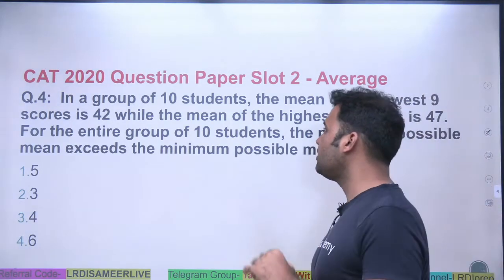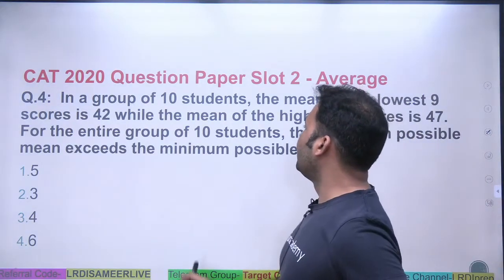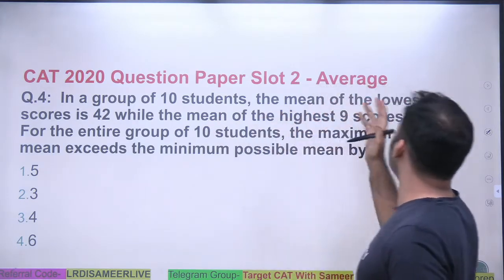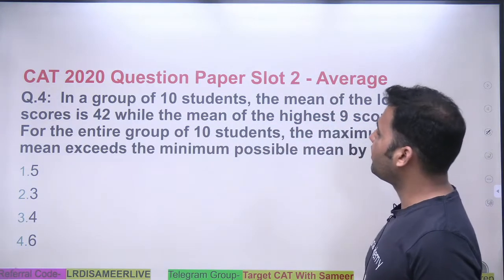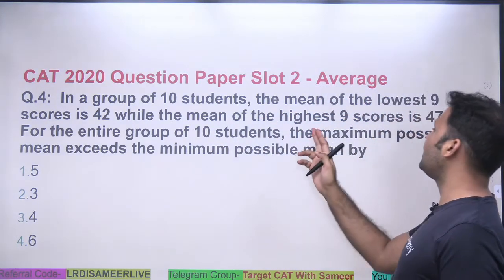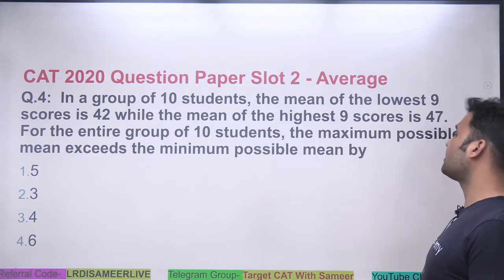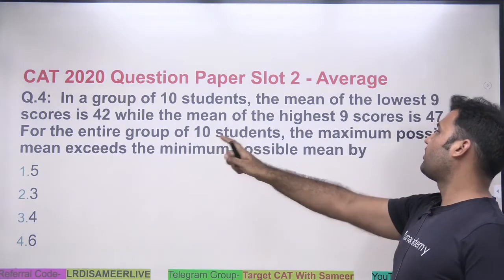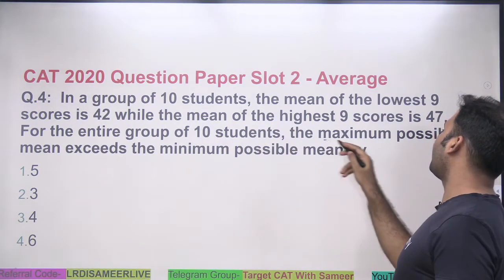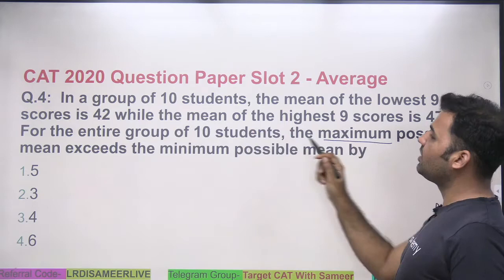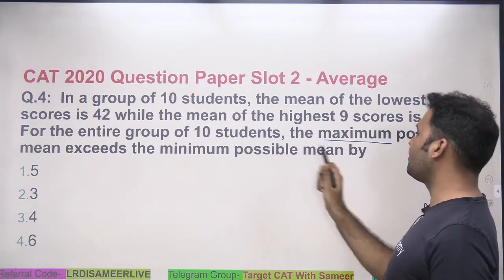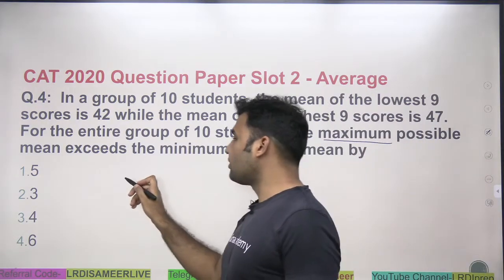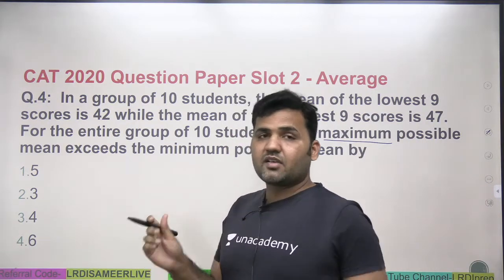A tricky but easy question. It says: in a group of 10 students, the mean of the lowest 9 scores is 42, while the mean of the highest 9 scores is 47. For the entire group of 10 students, by how much does the maximum possible mean exceed the minimum possible mean?